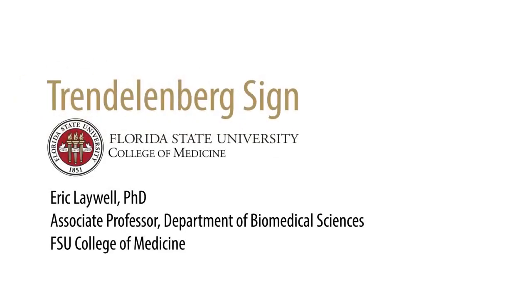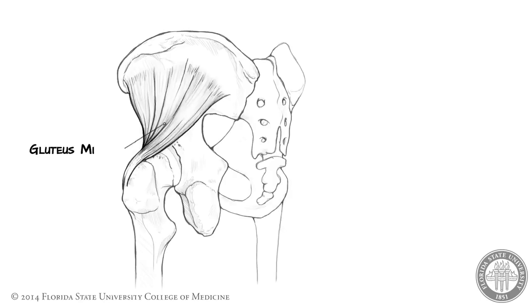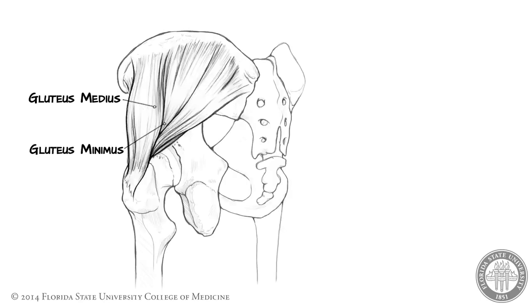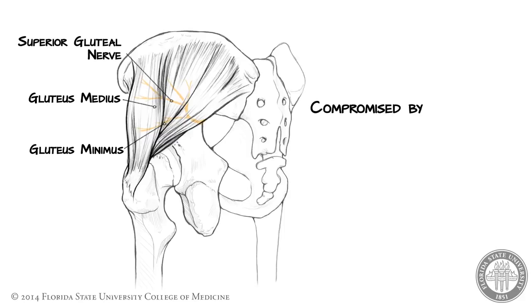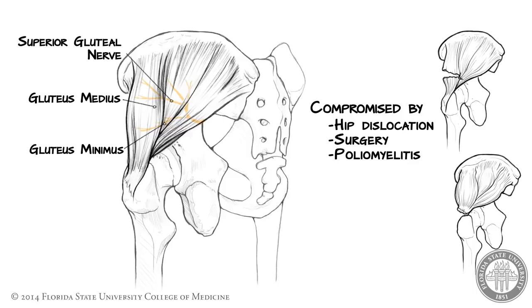The Trendelenburg sign results from unilateral, disrupted function of the primary abductor muscles of the hip: gluteus minimus and gluteus medius. Both muscles are innervated by the superior gluteal nerve, and their function can be compromised by damage to the nerve resulting from hip dislocation, hip surgery, or disease such as poliomyelitis. Direct damage to the muscle bellies or avulsion of their distal attachment from the femur can lead to weakness or loss of hip abduction.